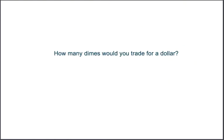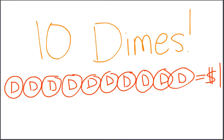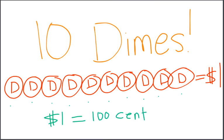How many dimes would you trade for a dollar? Ten dimes. One dime is worth ten cents, so the value of a dime is ten cents. If we count by tens: ten, twenty, thirty, forty, fifty, sixty, seventy, eighty, ninety, a hundred — or one dollar. One dollar is equal to one hundred cents. Ten dimes is equal to one hundred cents, or one dollar. So if you have ten dimes, you have one dollar, or one hundred cents.